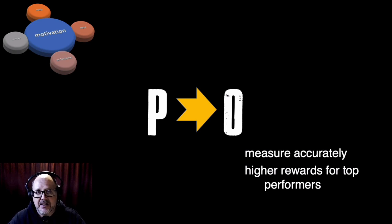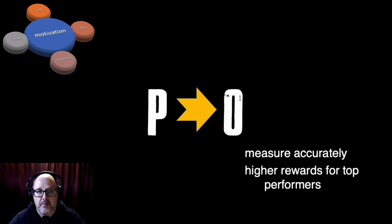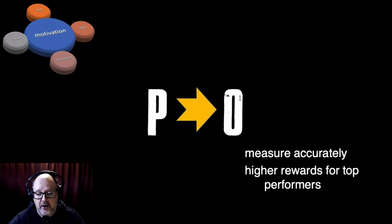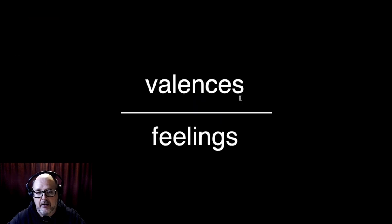That outcome is directly related to the effort through the performance. So we can expect — hence expectancy theory — that if more effort is put forth, there will be a higher level of performance, and if there's a higher level of performance, thus there will be a higher or better outcome.